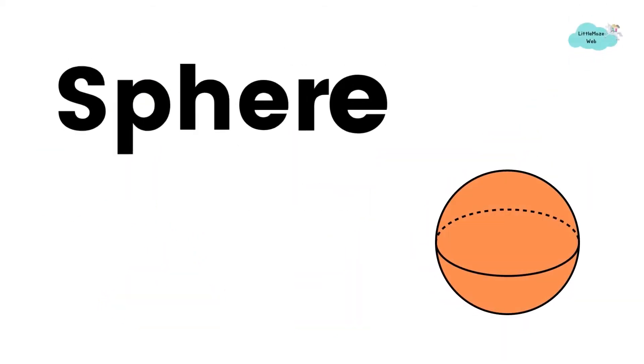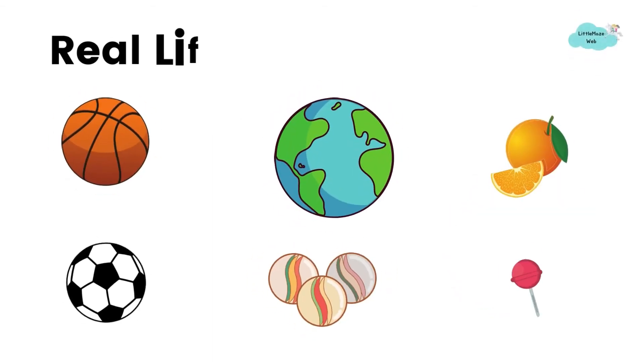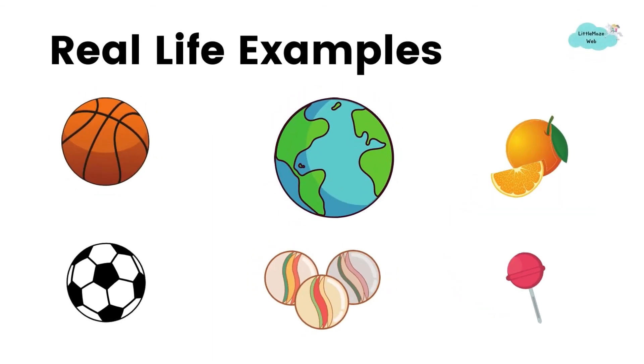This is a sphere. Real life examples of sphere are basketball, earth, orange, football, marbles and lollipop.